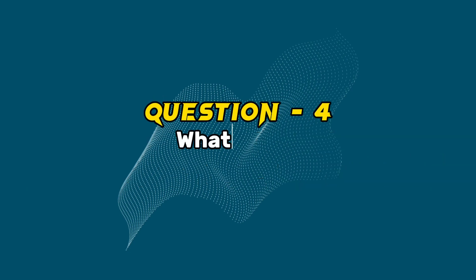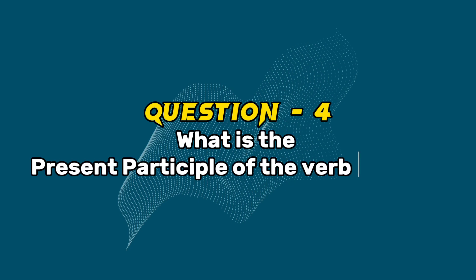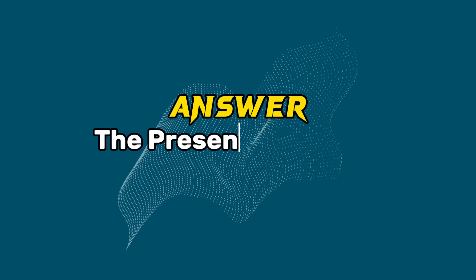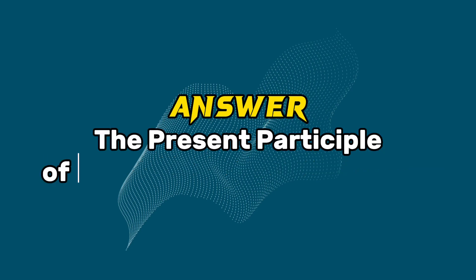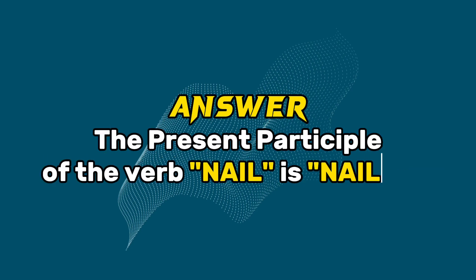Question 4: What is the present participle of the verb nail? Answer: The present participle of the verb nail is nailing.